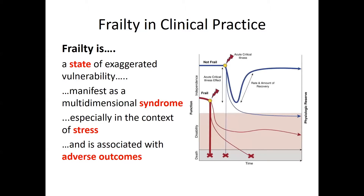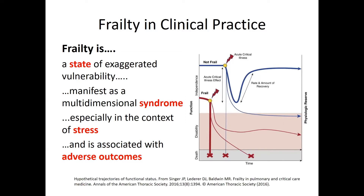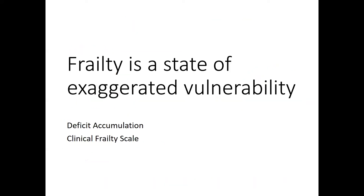One simple way to demonstrate frailty is to compare a person living with frailty to one who is not. In both cases they start in a state of independence without disability. The state of frailty may be quiet at first, but in the context of a stressor — such as acute critical illness or surgery — the underlying vulnerability becomes more evident. A more robust person may decline in function while sick, but they are expected to bounce back.